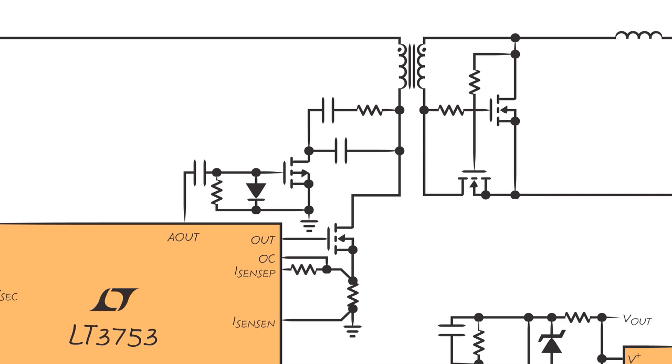Also, the active reset circuit shapes the reset voltage into a square waveform that is suitable for driving the secondary synchronous MOSFET. The MOSFETs on the secondary side are driven by the secondary winding voltage.